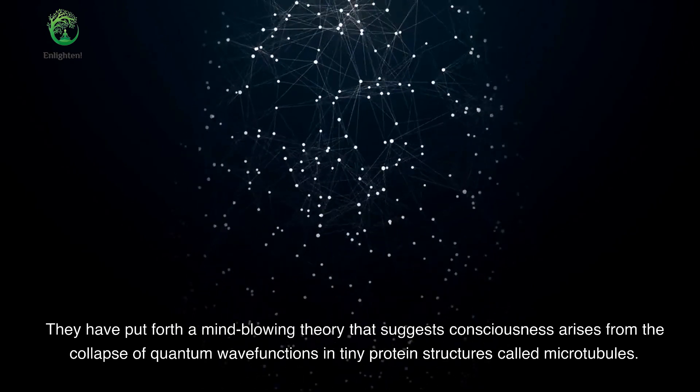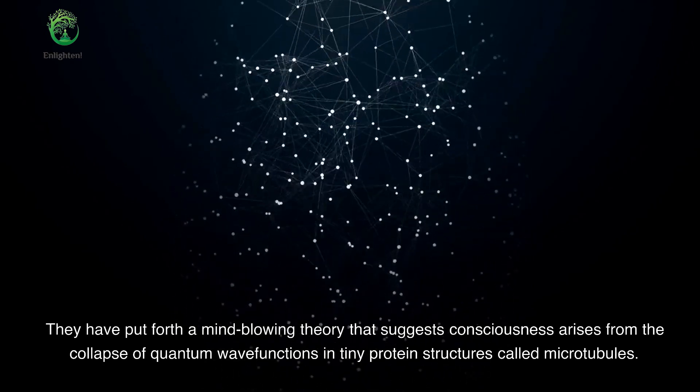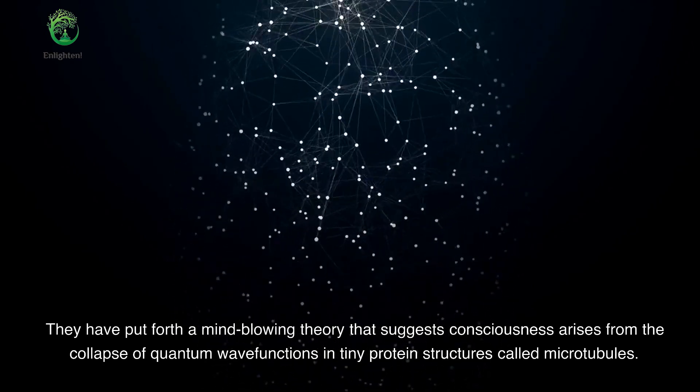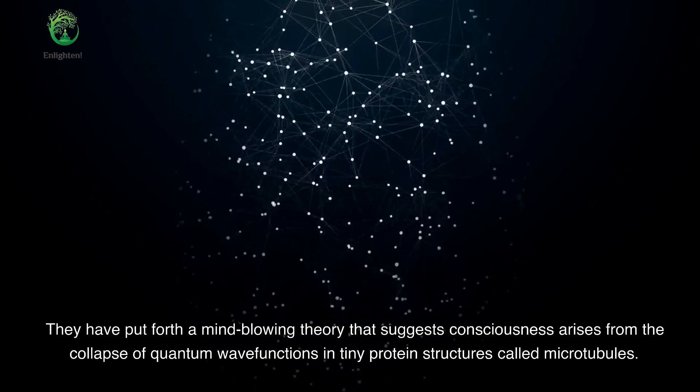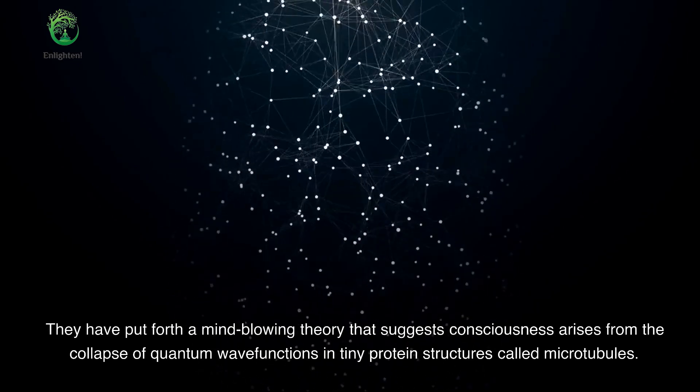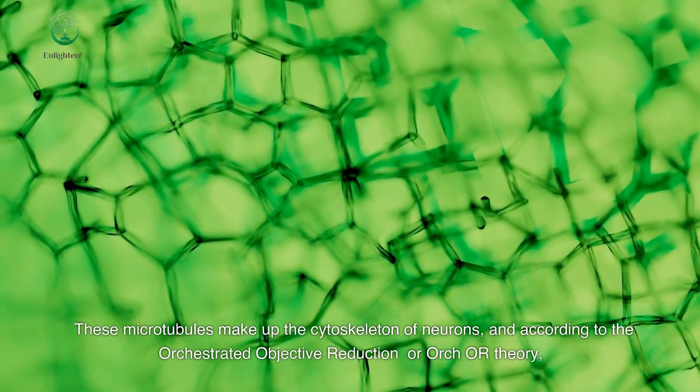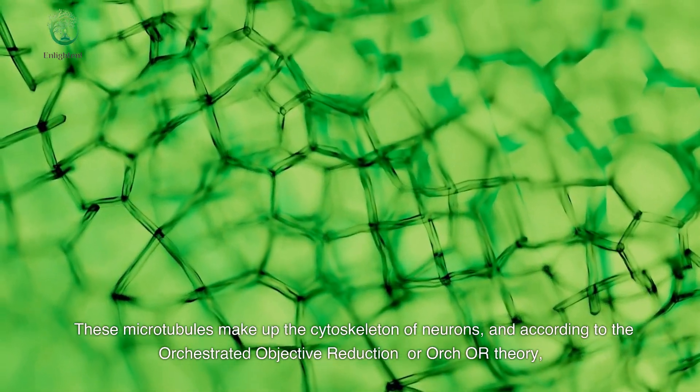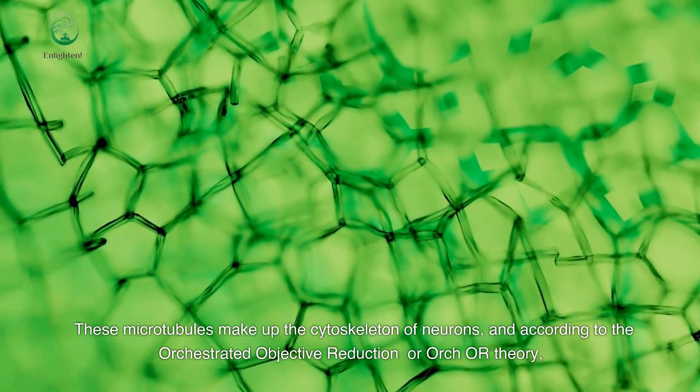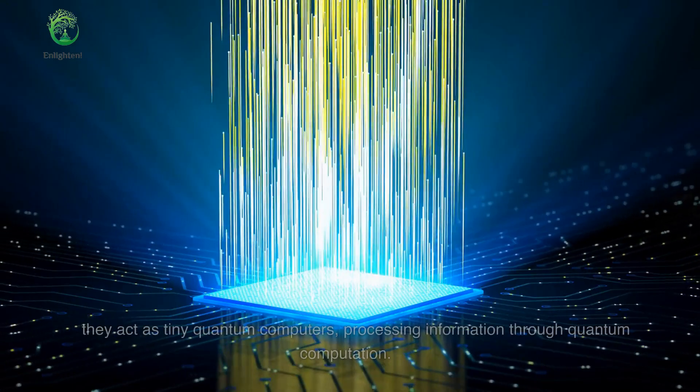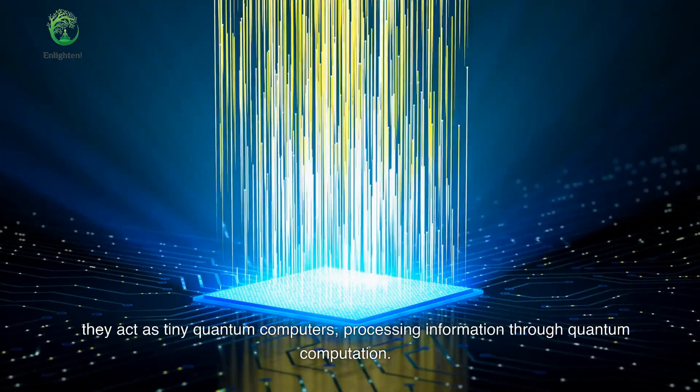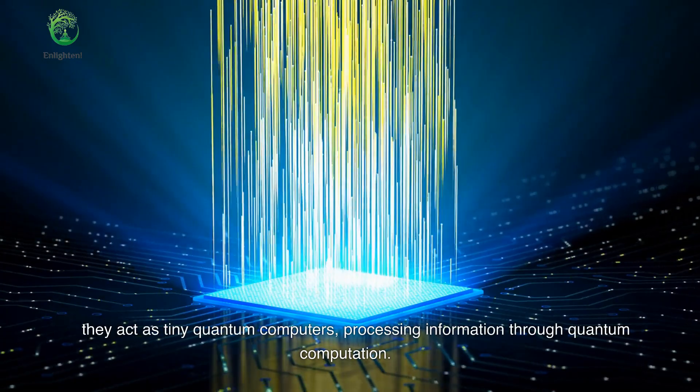They have put forth a mind-blowing theory that suggests consciousness arises from the collapse of quantum wave functions in tiny protein structures called microtubules. These microtubules make up the cytoskeleton of neurons, and according to the orchestrated objective reduction or ORCOR theory, they act as tiny quantum computers, processing information through quantum computation.